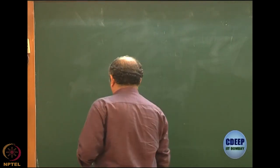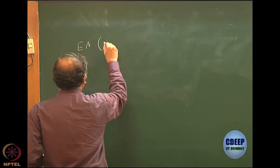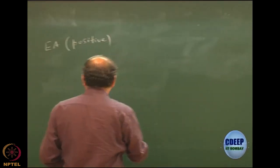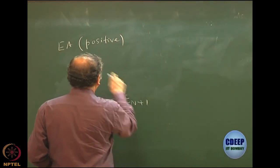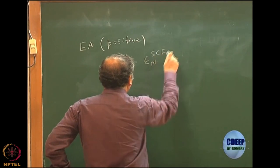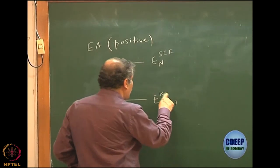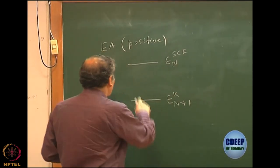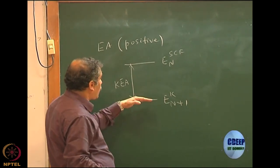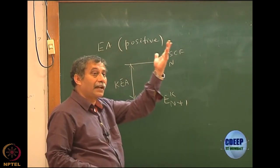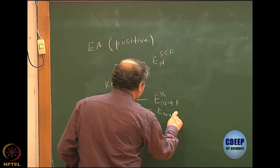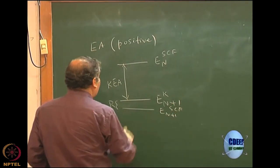Now consider the reverse case of electron affinity. For a positive electron affinity, the negative ion is more stable, meaning lower in energy, so E(N+1) will be lower than E(N). Let's say this is E(N) SCF. The E(N+1) Koopmans is the value without doing Hartree-Fock relaxation — that is your Koopmans electron affinity. Now E(N+1) will relax, just as N-1 relaxed, because we have frozen the orbitals, so there is a relaxation energy R, giving E(N+1) SCF.